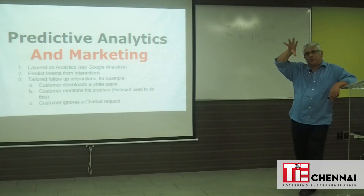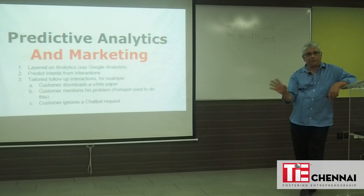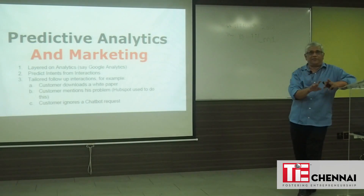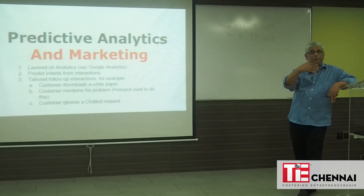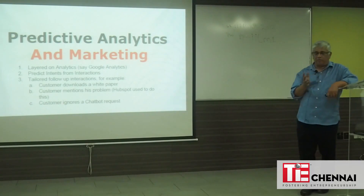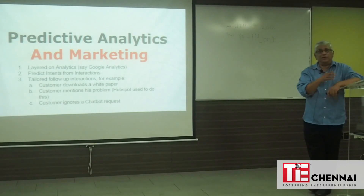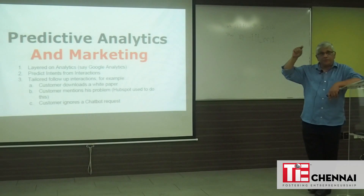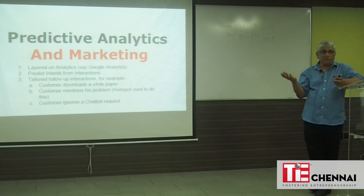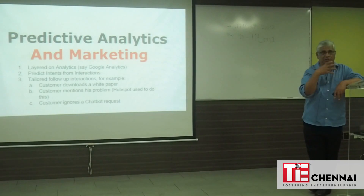HubSpot is a company that used a very interesting lead generation mechanism called Website Grader. You go to the HubSpot site, type your URL, it runs through your website and gives it a grade. It then says, 'Hey, if you give me your email, I can send you a report on how to improve your grade.' That gets your email as a lead. They then send a lot of email and social media marketing — normally very good content. Four or five years ago, HubSpot had five million people using this website grader. Out of five million, even 0.1% represents a whole bunch of qualified leads.